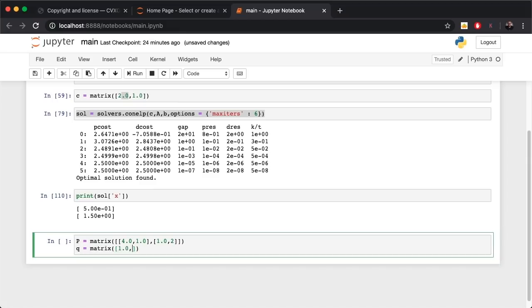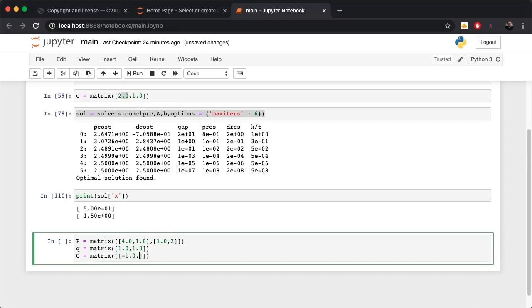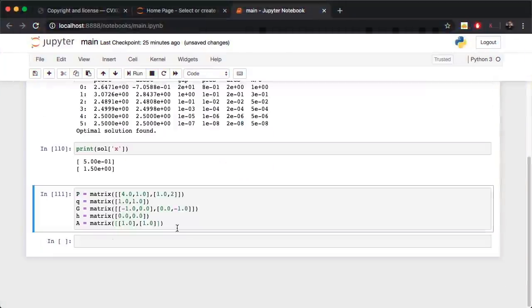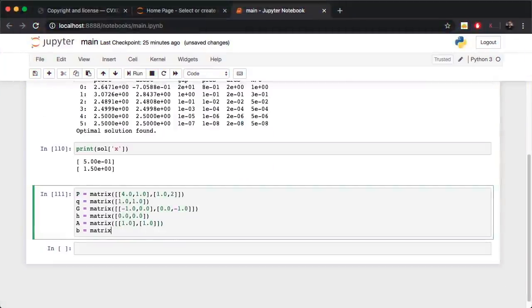Then your G: -1, 0 and 0, -1. And your h is all zeros.